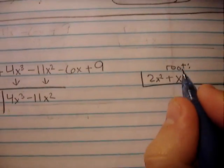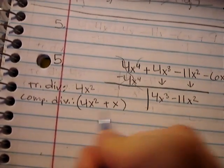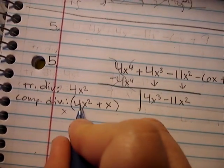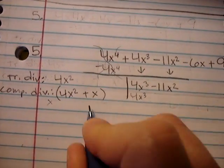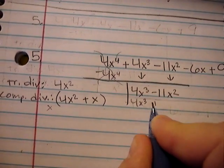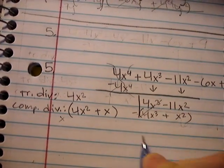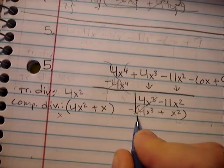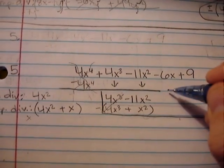Now you take the latest root you've found and you multiply it by each term in that complete divisor. So x is what we've just found. We're going to multiply it by all of these. x times 4x squared is 4x cubed. x times x is x squared. Let's see what will cancel out of here. The 4s will cancel, but this will not cancel. That's okay because this is a longer version of these kind of problems.